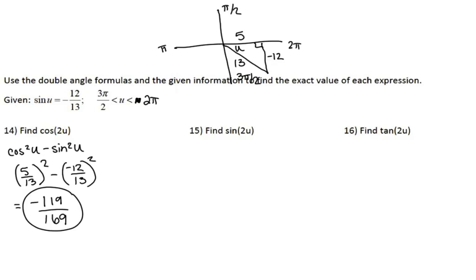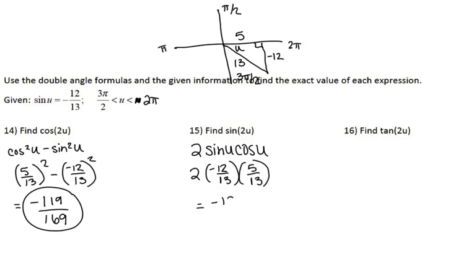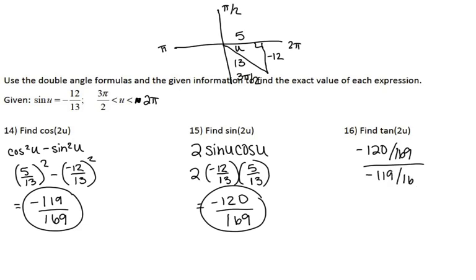For sine of 2u, the formula is 2 sine of u times cosine of u. Sine is negative 12 thirteenths and cosine is 5 thirteenths. Multiplying using the calculator gives negative 120 over 169. For tangent of 2u, you can use the formula sheet, or since I already know sine and cosine, tangent equals sine over cosine. So negative 120 over 169 divided by negative 119 over 169 — the 169s cancel and the negatives cancel — giving 120 over 119. You would get the same result using the tangent double angle formula.